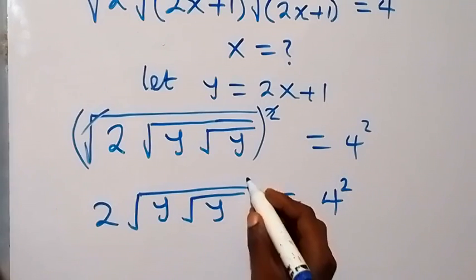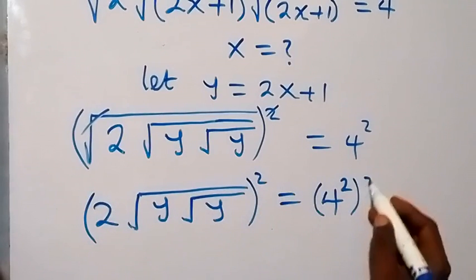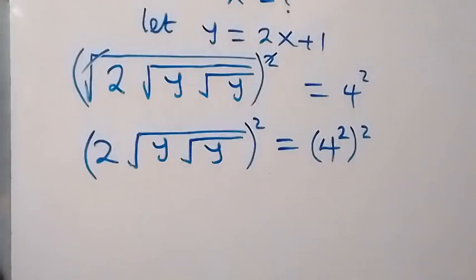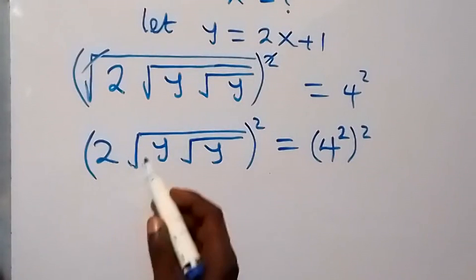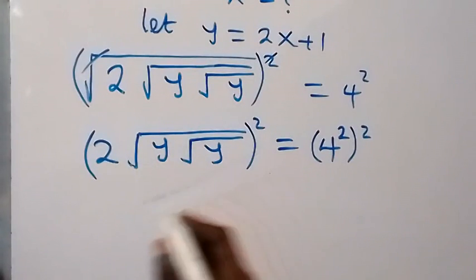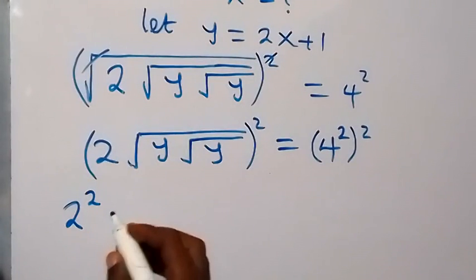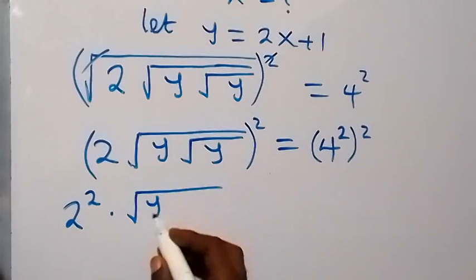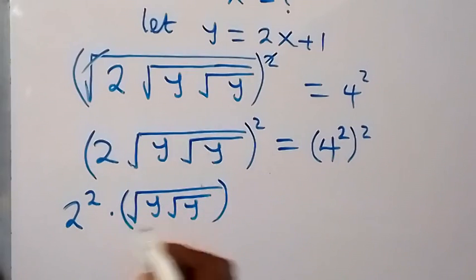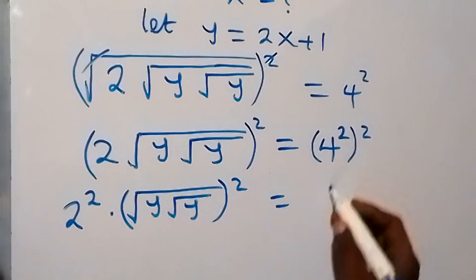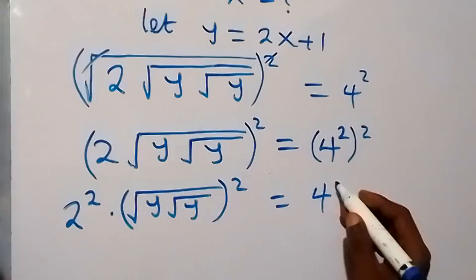Next, let's square both sides again. We square this side and also we square this side. The square affects these two numbers — we affect 2 and we affect this root — so we have 2 squared, then multiply by root y, then root y squared, equals to here this power multiplies and gives us 4 raised to power 4.